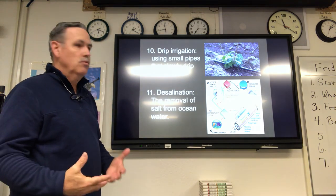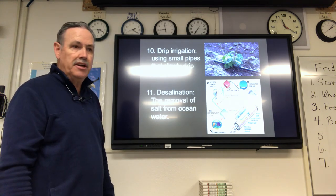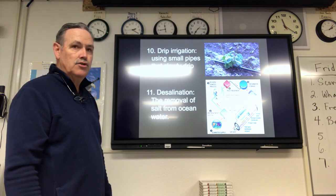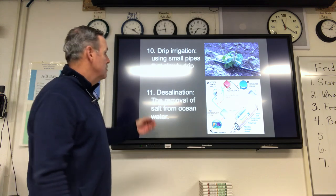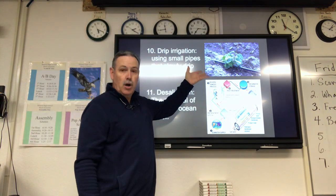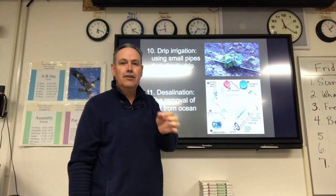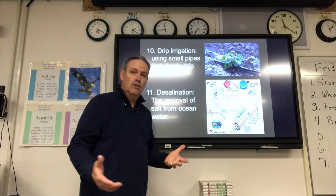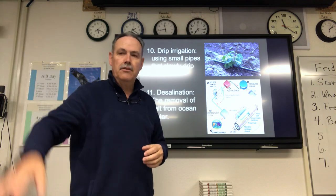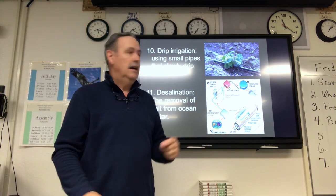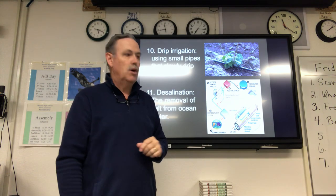Drip irrigation is an important one. Water is very, very valuable in this region — it's a scarce commodity because it's so dry. They need to grow crops, so each plant would have just a little bit of water dripped continually onto it. We might let water run down a furrow in a garden, but they can't do that in this region. Having drip irrigation is a very smart way to handle water scarcity.